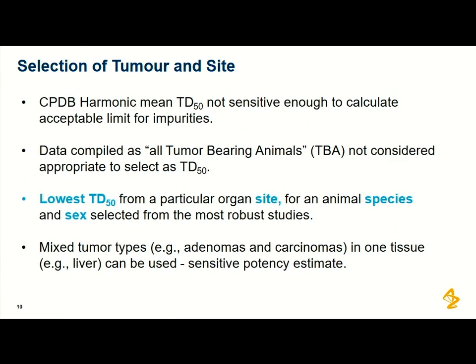Once you have your robust study, the next question is which TD50 to select — you may have multiple carcinogenicity studies. The CPDB calculates a harmonic mean TD50, but this is not deemed sensitive enough for calculating an acceptable limit for impurities. You should look at the studies and take your lowest TD50 from a particular organ site for an animal species and sex, selected from your most robust study. The CPDB's TBA (All Tumour-Bearing Animals) group is also not considered sensitive enough — but if tumours are broken out into specific types for an organ, such as adenomas and carcinomas in the liver, that can be used.